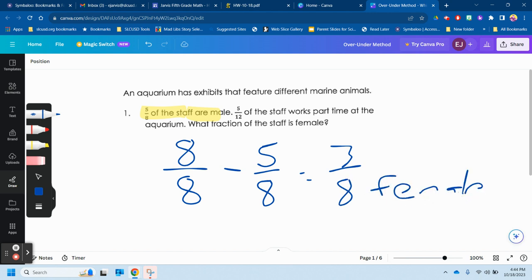So that's kind of the trick when we get into word problems. I'll often throw in some information. We don't need to know who works part-time. They didn't ask us, what fraction of the staff is female? That's all we have to answer. So I took the whole eight-eighths, which is one whole, and subtracted the five-eighths.